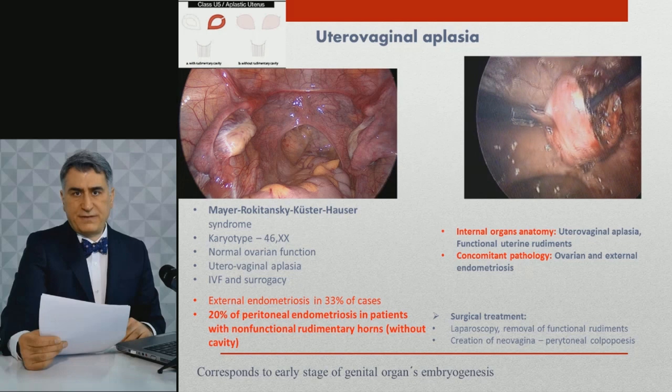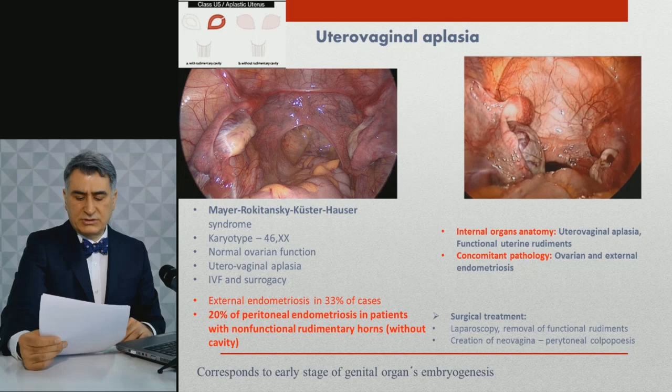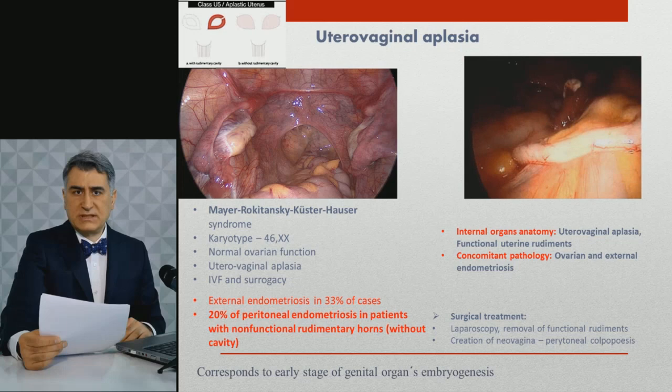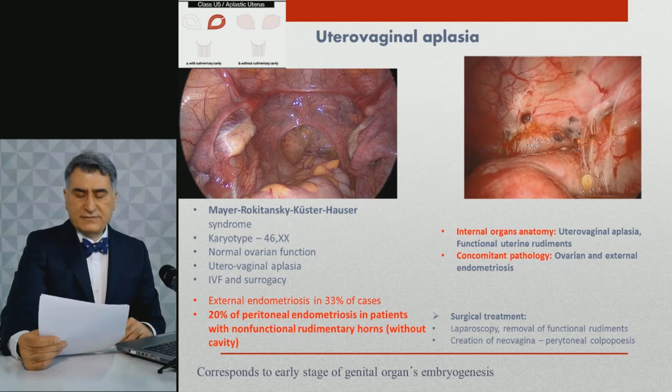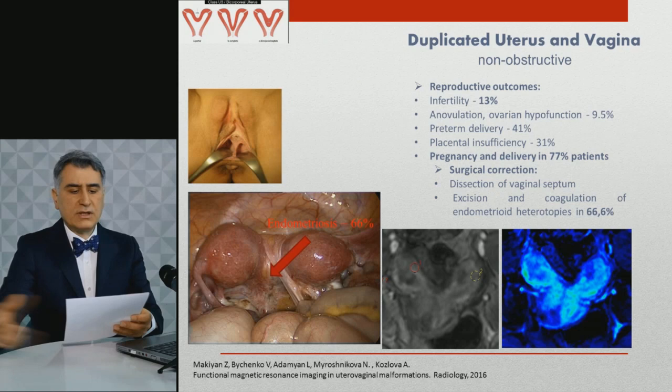The functional uterine rudiments with endometrial cavities, ovarian and external endometriosis, were removed laparoscopically. These patients may be candidates for oocyte donation by IVF in a surrogacy program.